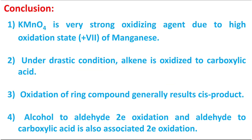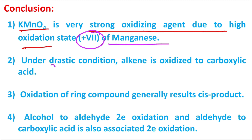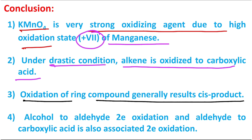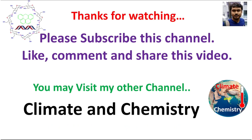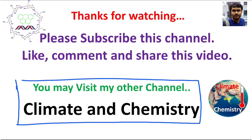In conclusion, what you have learned today: KMnO₄ is a very strong oxidizing agent due to the +7 oxidation state of the central manganese atom. Under drastic conditions, an alkene is oxidized to the corresponding carboxylic acid. Oxidation of ring compounds generally results in a cis product. Also note that alcohol to aldehyde oxidation is a two-electron oxidation, and aldehyde to carboxylic acid oxidation involves another two electrons. Thanks for watching — please share your opinion in the comments and visit my other channel on climate and chemistry.